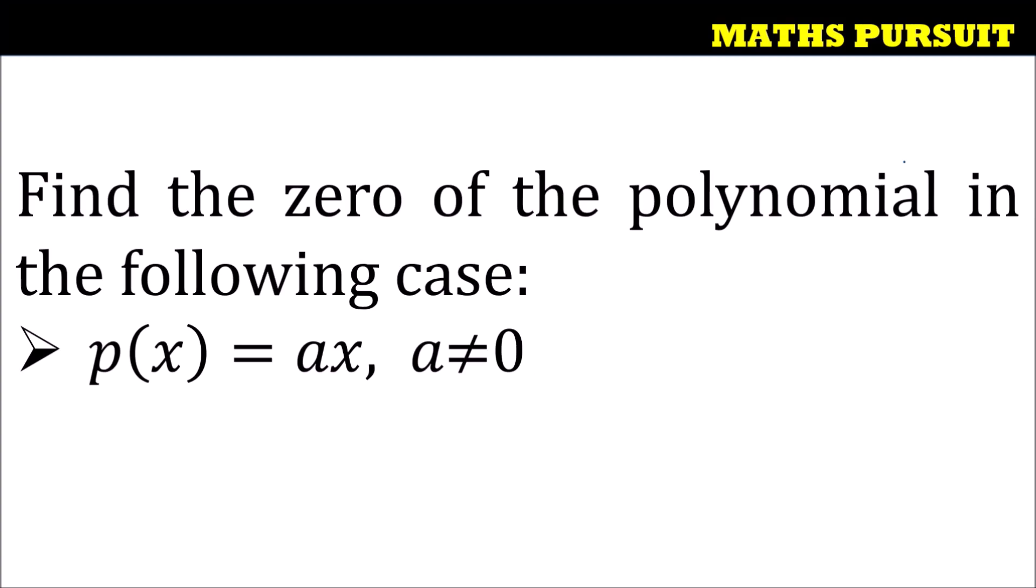So guys let us see how we can find out the zero of the given polynomial. The question has given us here this polynomial p(x). p(x) is equal to ax and the question is asking us to find out the zero of the polynomial.